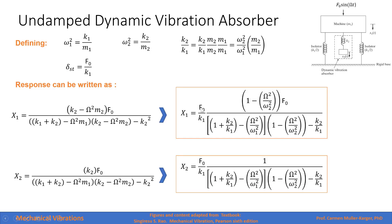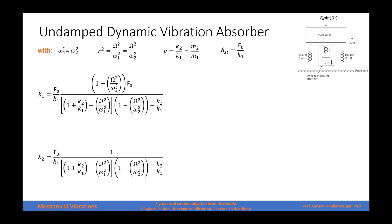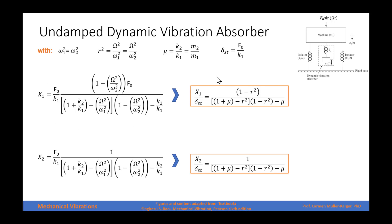If we divide the expressions by k1, we obtain something involving the static deflection, a relation between the forcing frequency and properties of the dynamic absorber, and the forcing frequency divided by the properties of the machine. We can further simplify by introducing dimensionless parameters: mu, which is the ratio of absorber characteristics to machine characteristics, and r, the frequency ratio. The static deflection is the magnitude of the applied force divided by the spring constant of the machine.